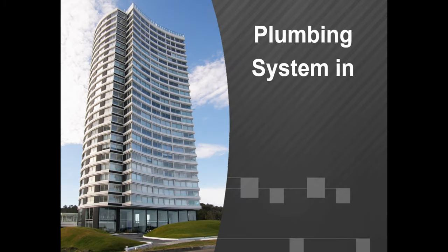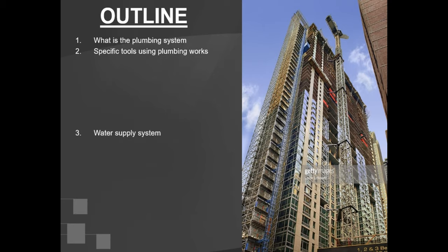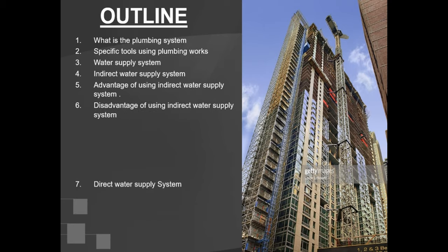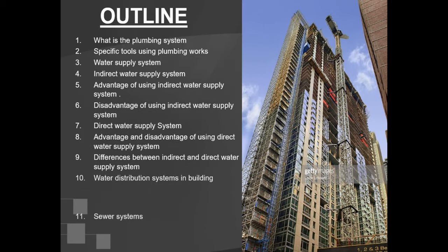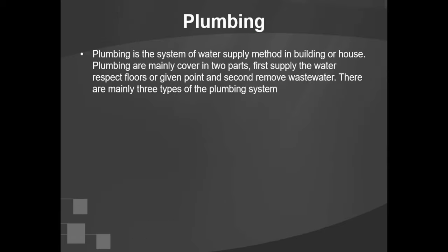Hello my friends, today our lecture is about plumbing system in high rise building. Plumbing is the system of water supply method in a building or house. Plumbing mainly covers two parts: first, supply water to respective floors or given point, and second, remove waste water.